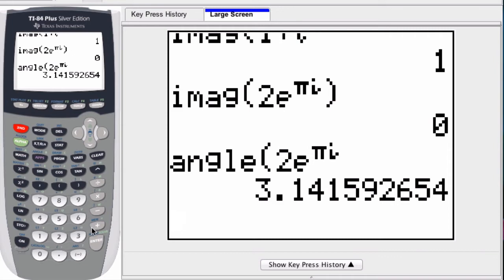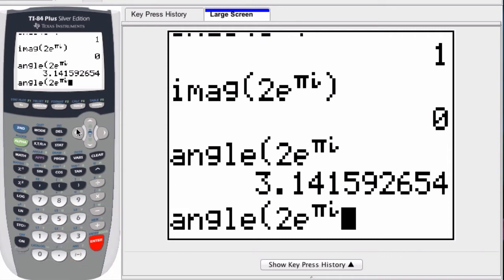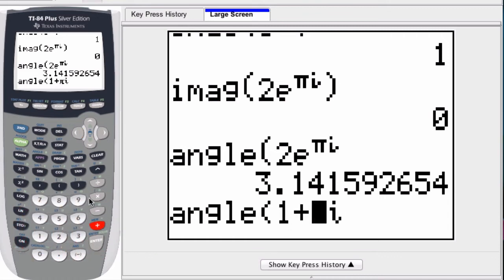If we do this again, we hit second entry. But I enter in rectangular complex form, so I enter in 1 plus, I don't know, let's just say i.